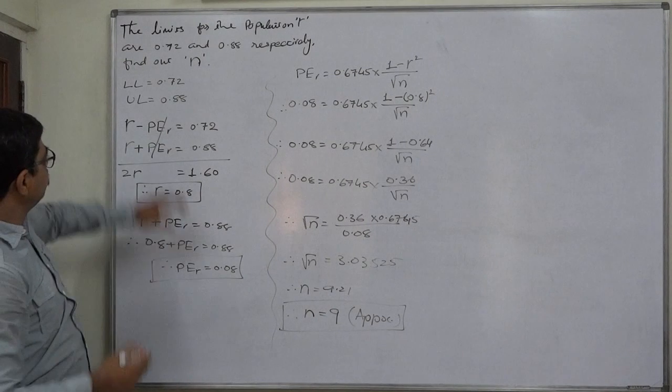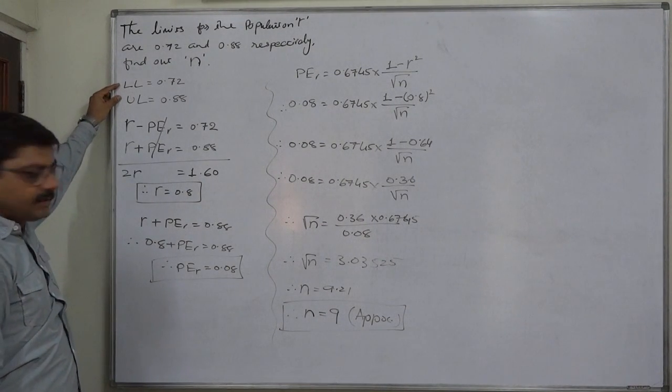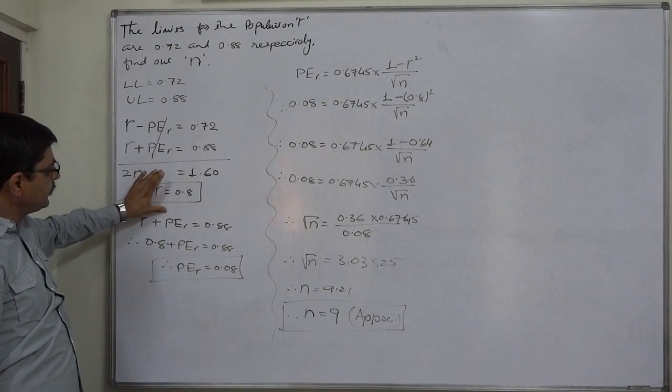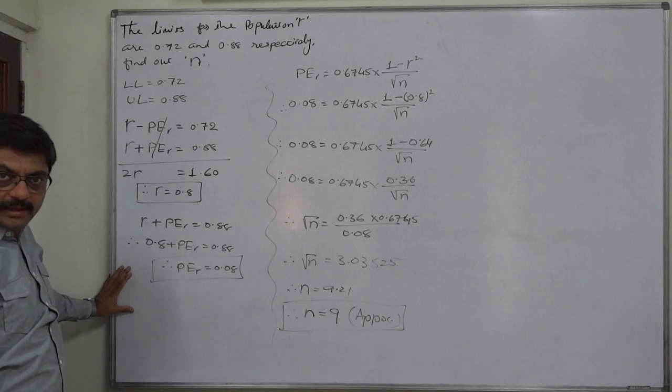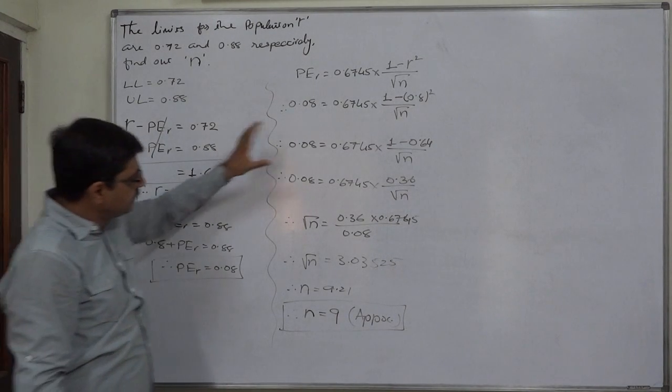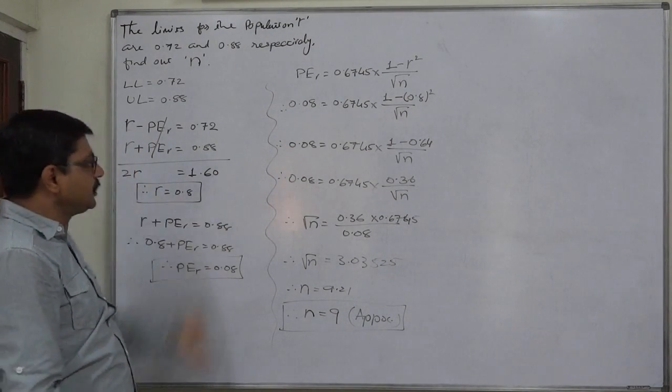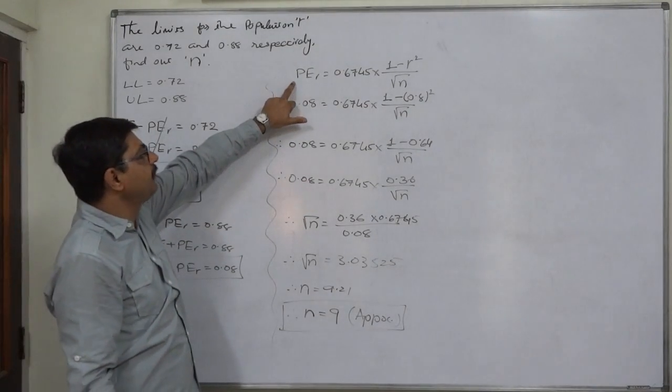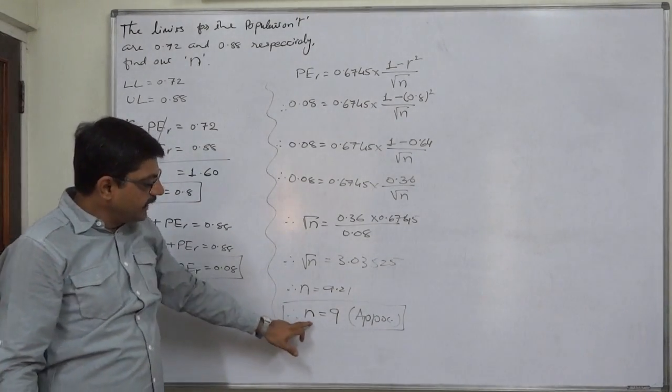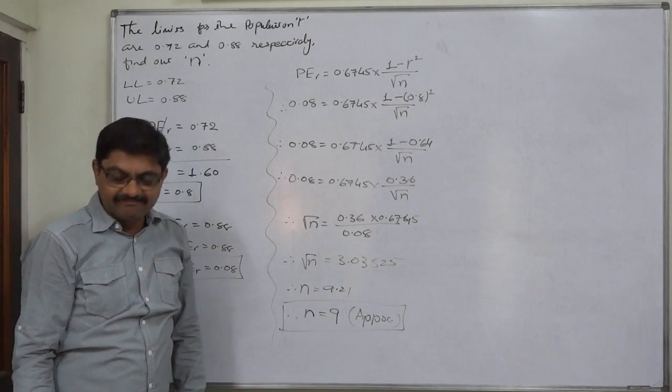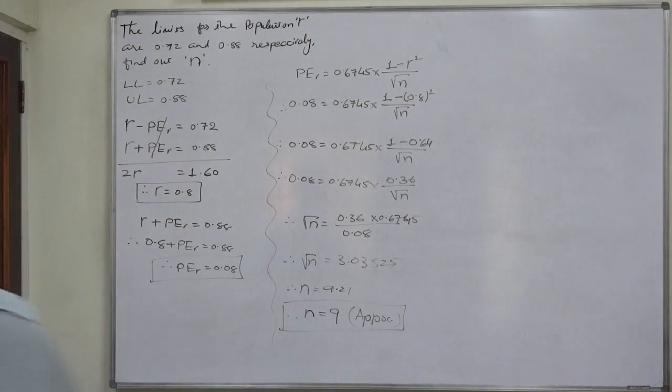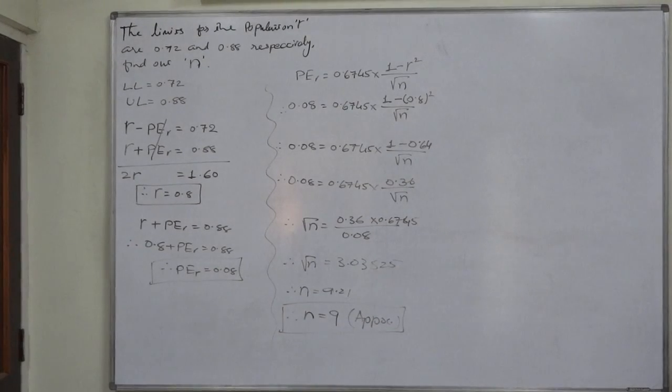Thus on the basis of the lower limit and upper limit, we first calculate the coefficient of correlation and probable error, and on the basis of these two, by substituting these two in the formula of probable error, we ultimately can find the sample size. That's it, thank you very much.